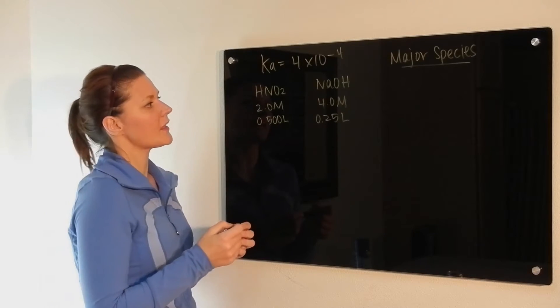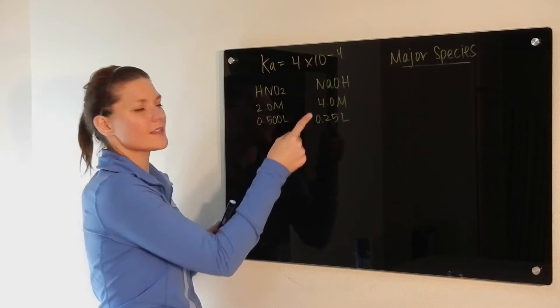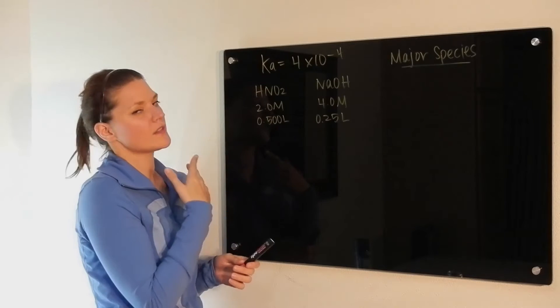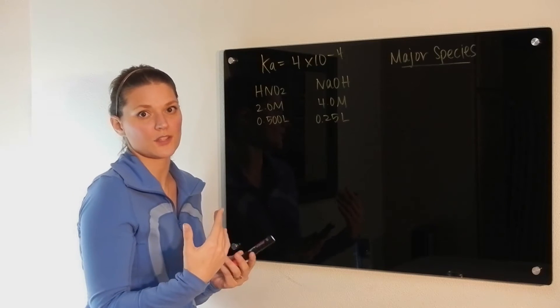So once again, we look at the substances that we have. We have a weak acid that is not its conjugate base, so this is not a buffer. Don't use Henderson-Hasselbalch.